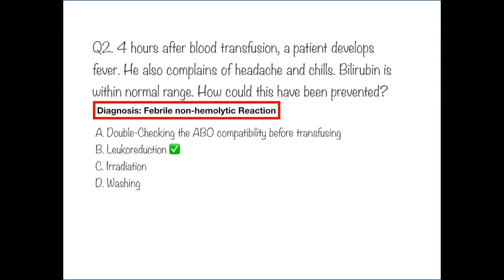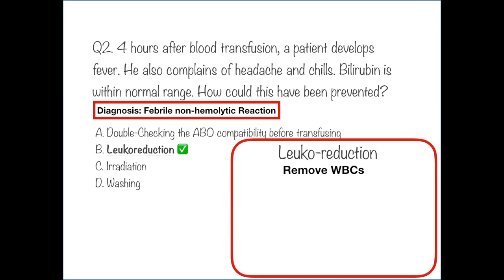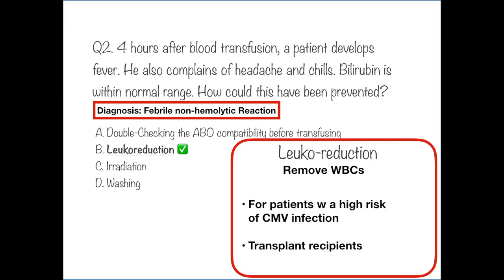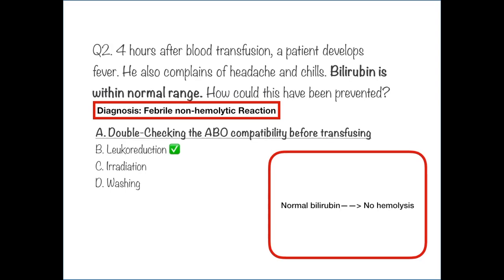We learned that febrile non-hemolytic reaction takes place due to cytokine accumulation. Leukoreduction — breaking it down: 'leuko' refers to white blood cells, and 'reduction' means decreasing. In the process of leukoreduction, we are essentially removing all the white blood cells. In the absence of white blood cells, there will be no cytokines produced and released, so febrile non-hemolytic reaction can be prevented. This is done for recipients who are chronically transfused and for individuals at risk of CMV infection. Transplant recipients also benefit from leukoreduction. Normal bilirubin levels in our patient help rule out ABO incompatibility.